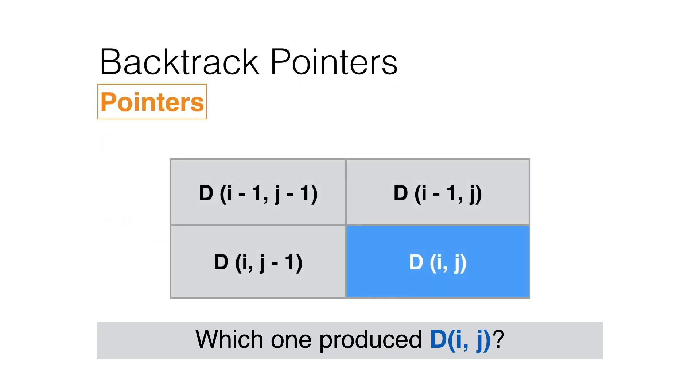A usual convention is to store a 1 in the matrix of pointers if the maximum was achieved using D(i-1, j-1), 2 if it was achieved using D(i-1, j), and 4 if it came from the option that uses D(i, j-1).